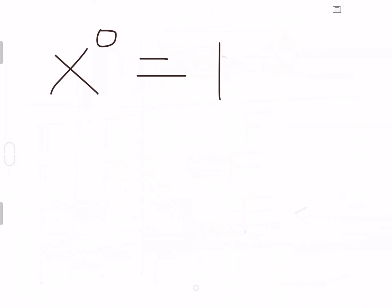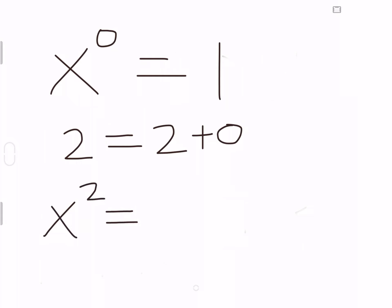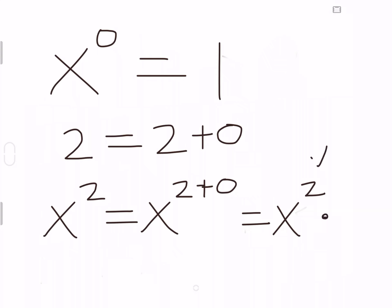Let's pick the number 2. As we know, 2 is equal to 2 plus 0. So that tells us that x squared is equal to x to the 2 plus 0, which by our rules of exponents equals x squared times x to the 0.